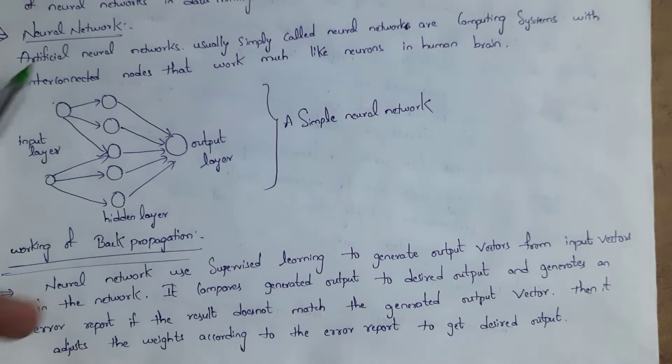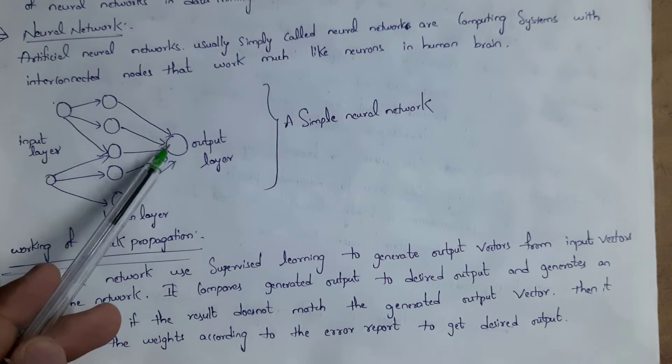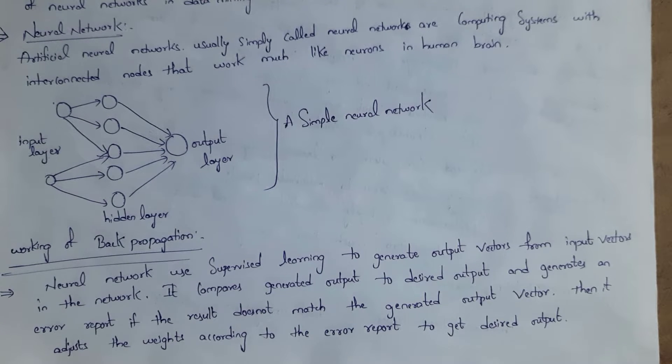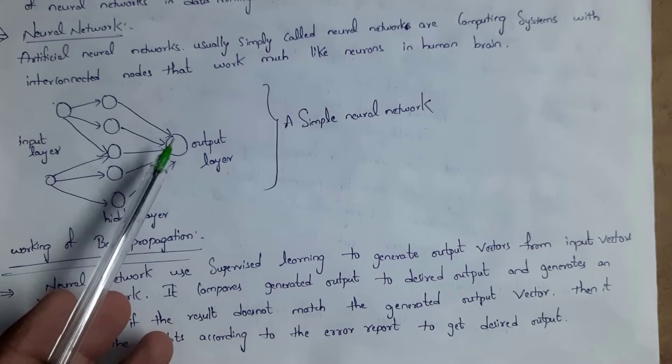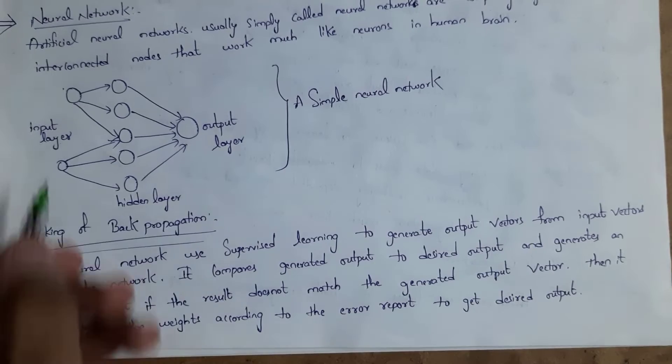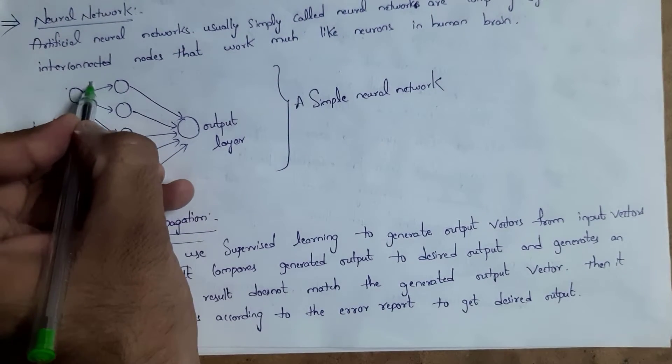If you consider this example, this is a simple neural network. In neural networks, nodes are interconnected to each other. We call the starting nodes the input layer and ending nodes the output layer. Nodes which are in between this input layer and output layer are known as the hidden layer. Nodes are interconnected to each other with some weights.